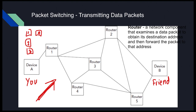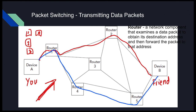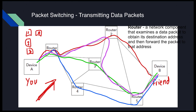Each data packet might take a different path through the network. For example, packet one might go from router one to router two and then to your friend; packet two might go from router one to router four, router five, then to your friend. These paths depend on how much traffic there is in the network. They might all arrive at different times, which is why packet numbers are so important — so Device B knows in what order to put all the packets back together to correctly reassemble your message.